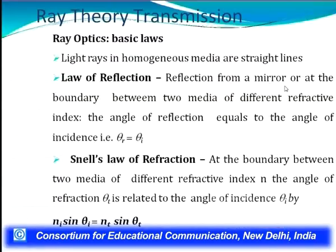We now discuss some ray theory formulas to explain fiber optics in more detail. In ray optics, a light ray in a homogeneous medium travels in a straight line. The law of reflection states that when light reflects from a mirror or at a boundary between two media of different refractive indices, the angle of reflection equals the angle of incidence: θr = θi. Glass and air have different refractive indices.